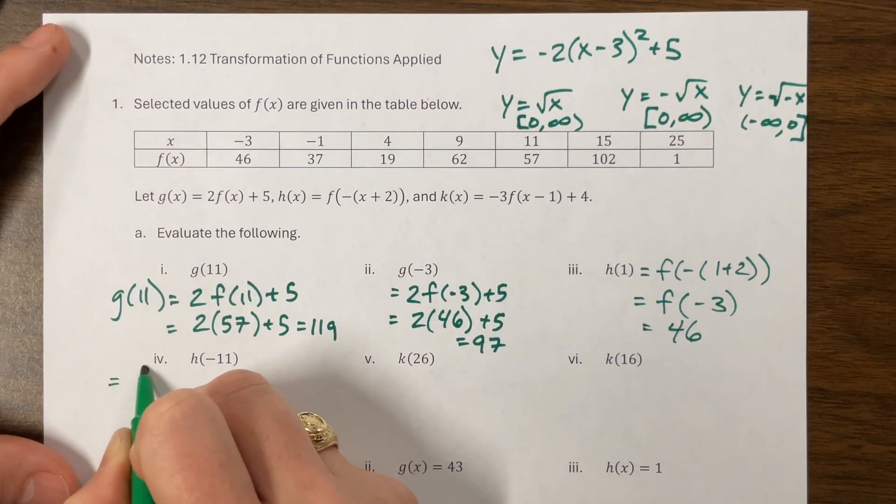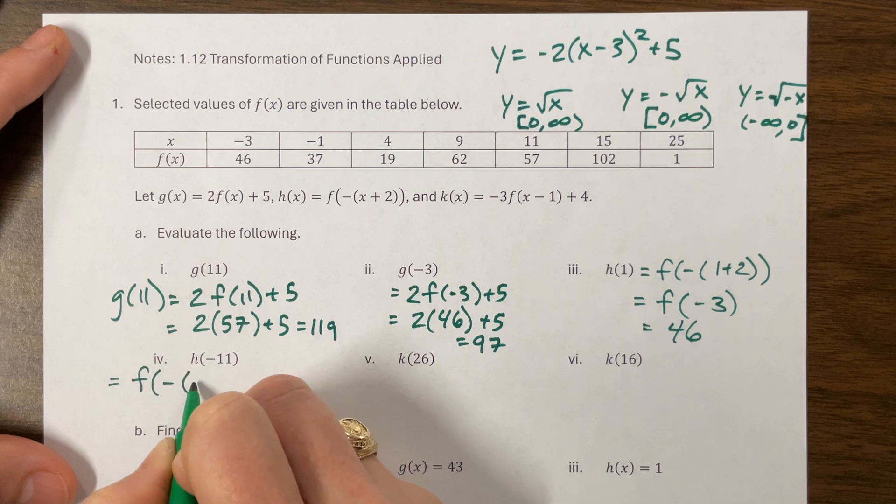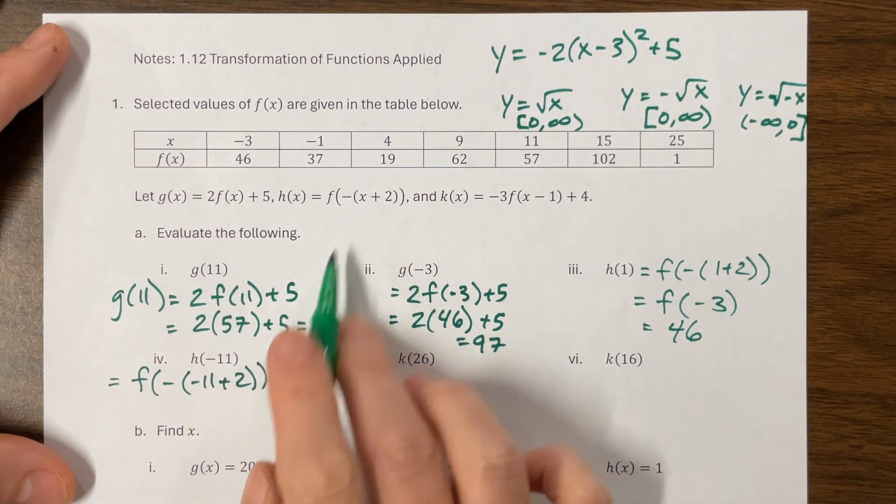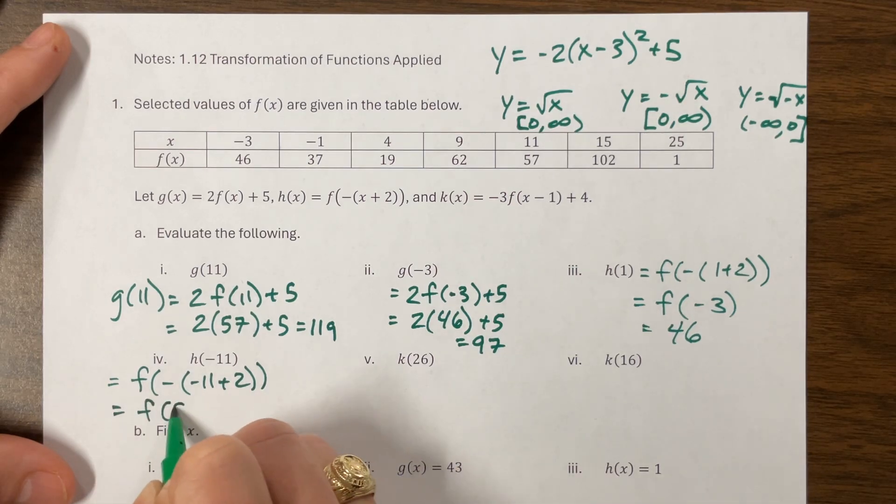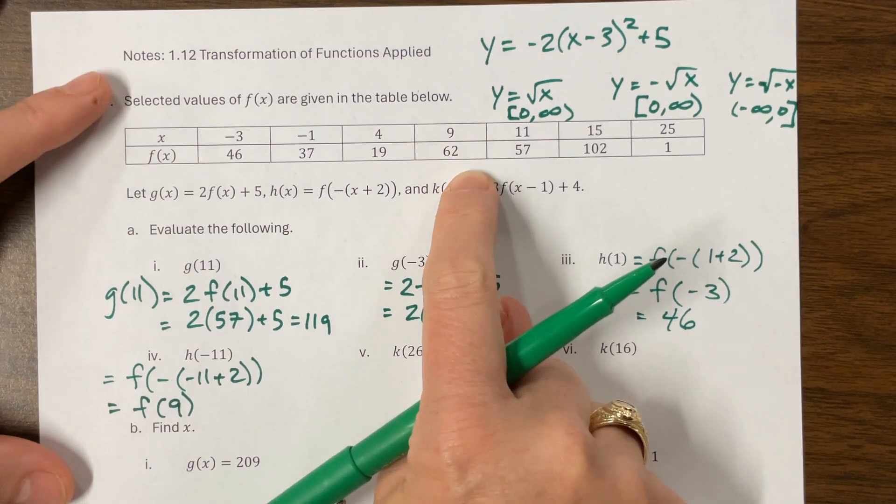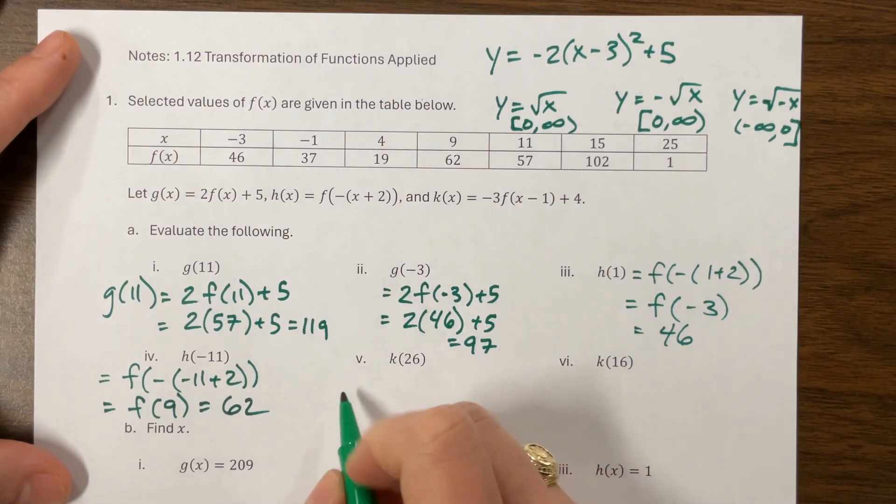So this one, H of 11 would be equal to F of negative, negative 11 plus 2, right? Yes. So then this is negative 9, make it positive, is a positive 9, equals F of 9. If we look at our table, F of 9 is equal to 62.